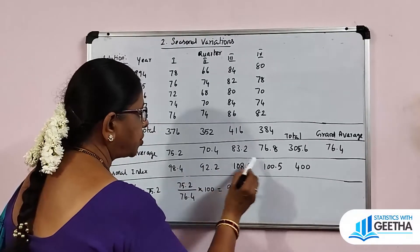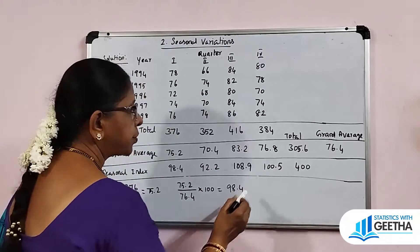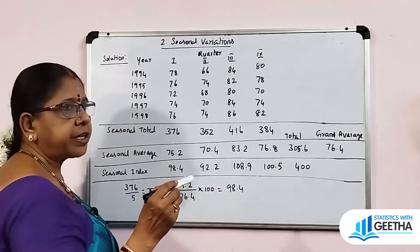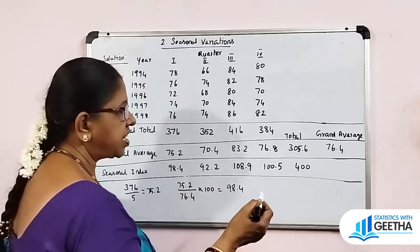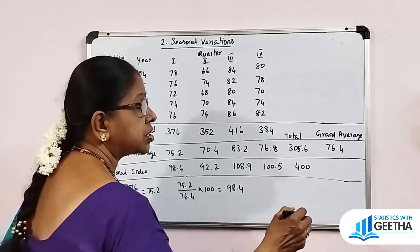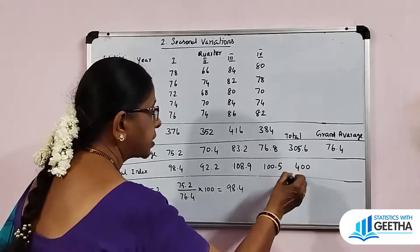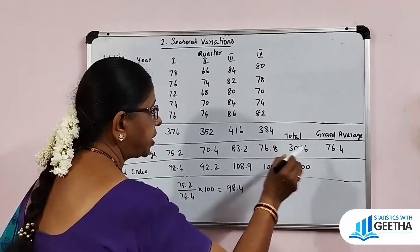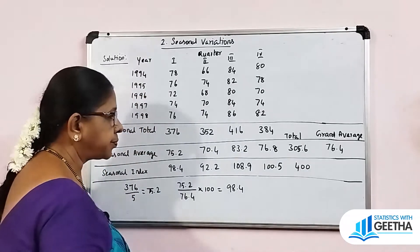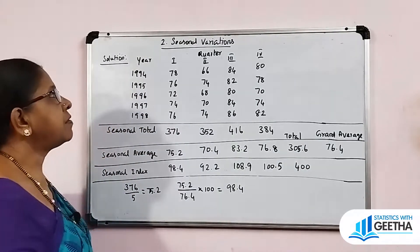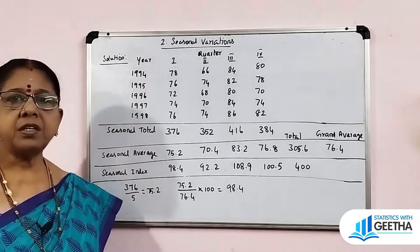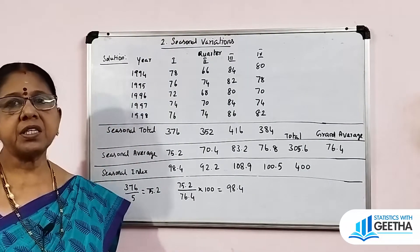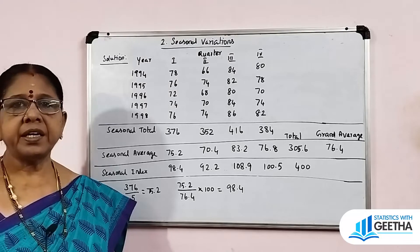The total of the seasonal indices equals 100 × number of seasons = 100 × 4 = 400. The sum of our computed indices (98.4 + 92.2 + 108.9 + 100.5 = 400) confirms this. This completes the simple average method for measuring seasonal indices.